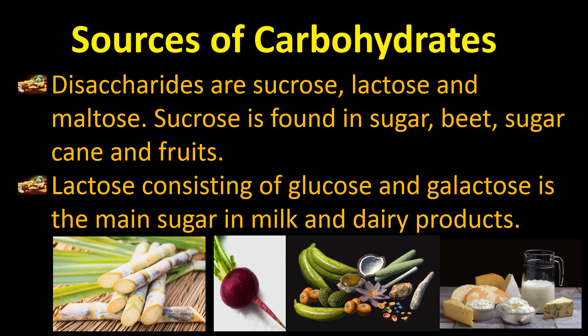Sucrose is a disaccharide formed by means of two monosaccharides. It is found in sugar beet, sugarcane, and fruits.